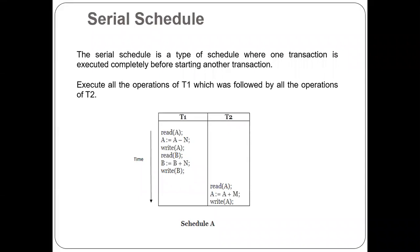What is a Serial Schedule? A Serial Schedule is a type of schedule in which one transaction is executed completely before starting another transaction. All operations of T1 are executed first, followed by all operations of T2.